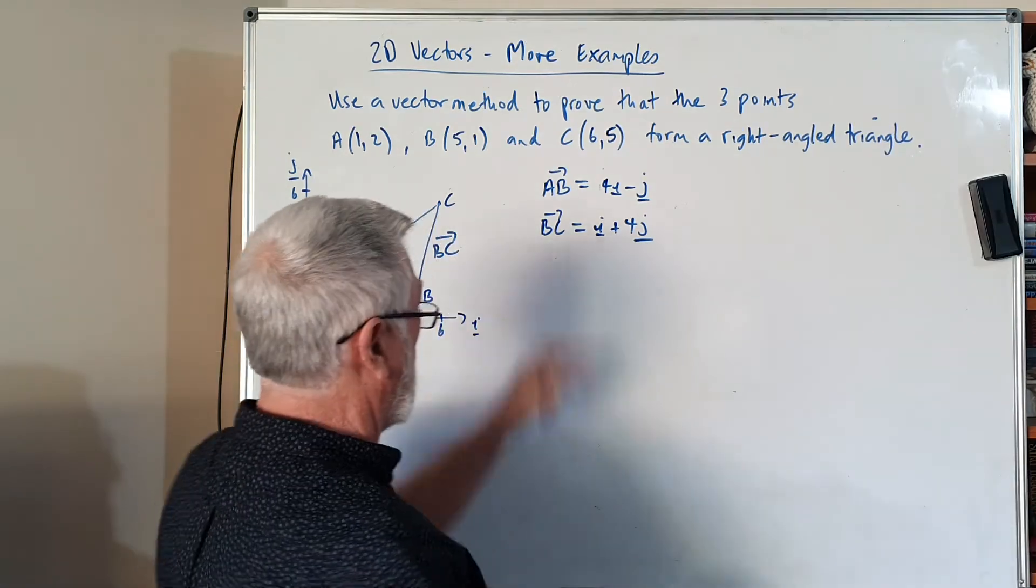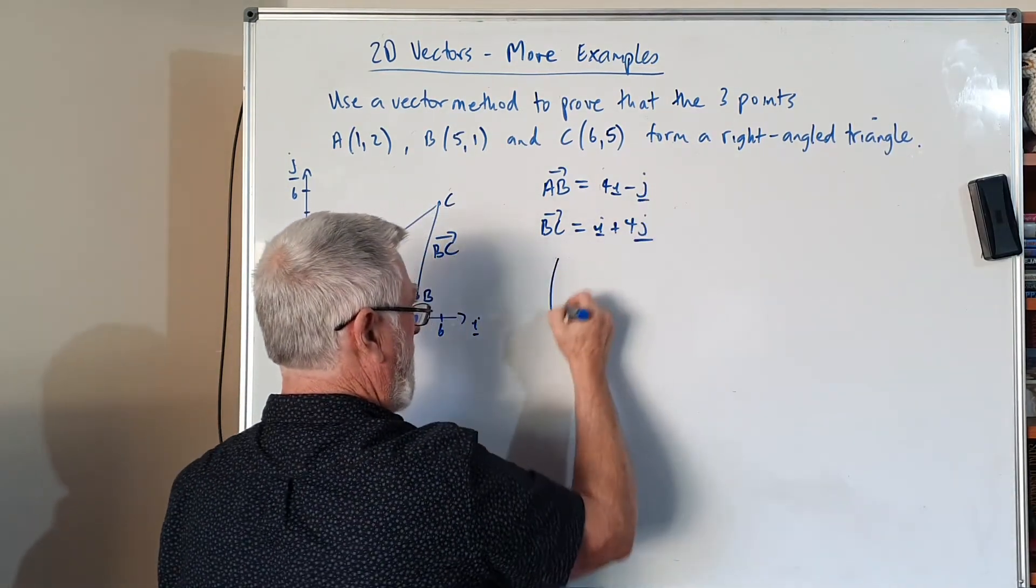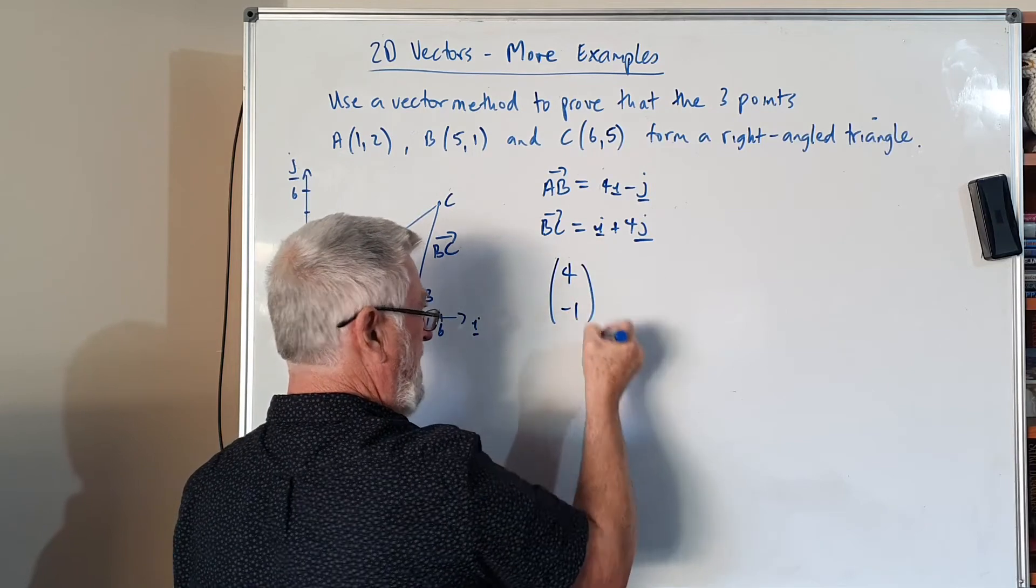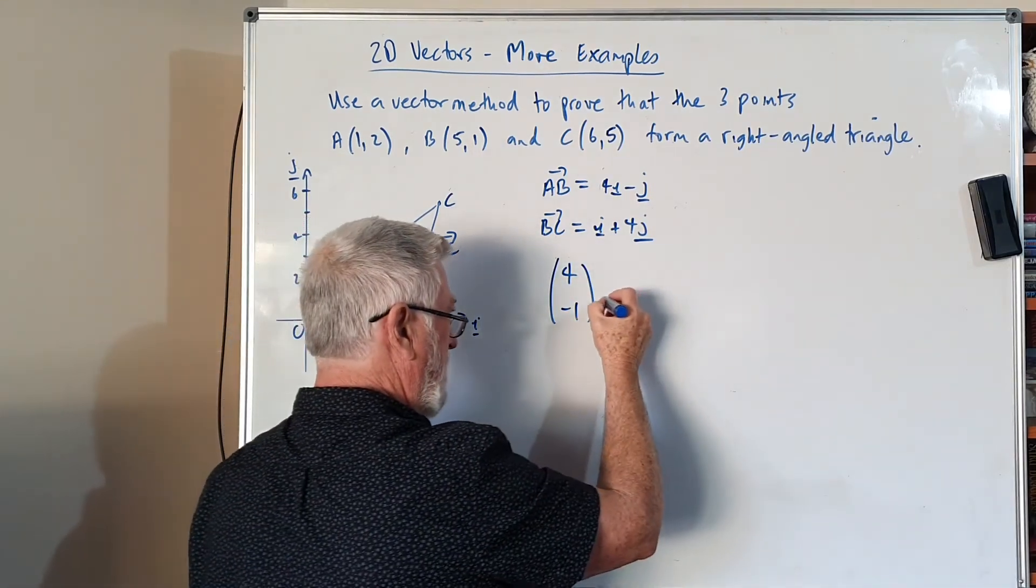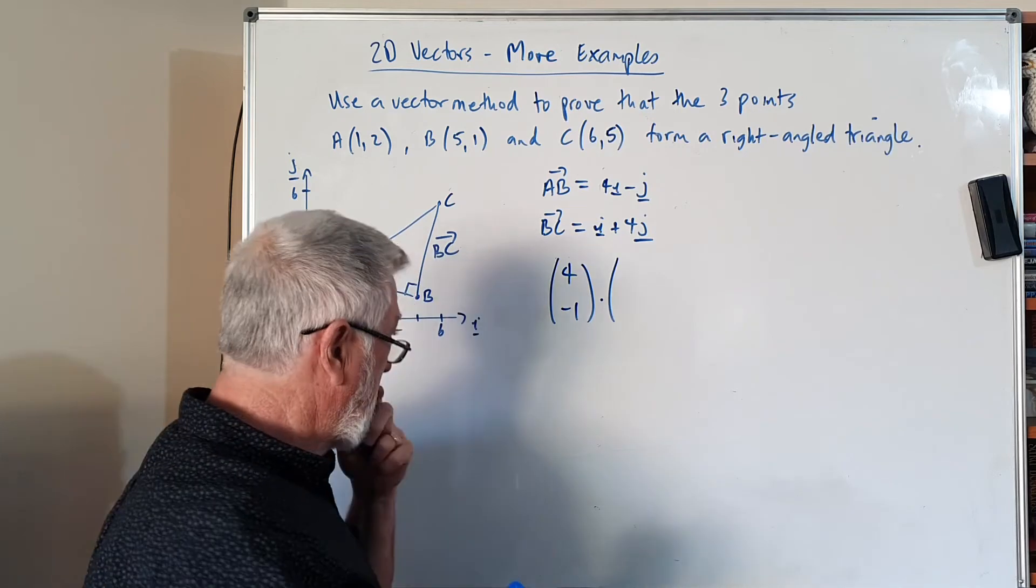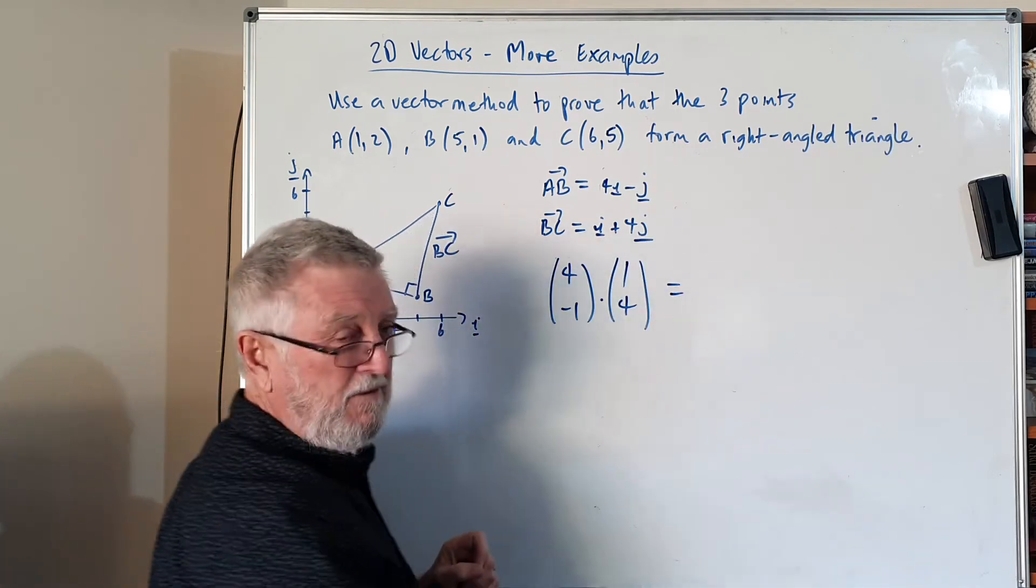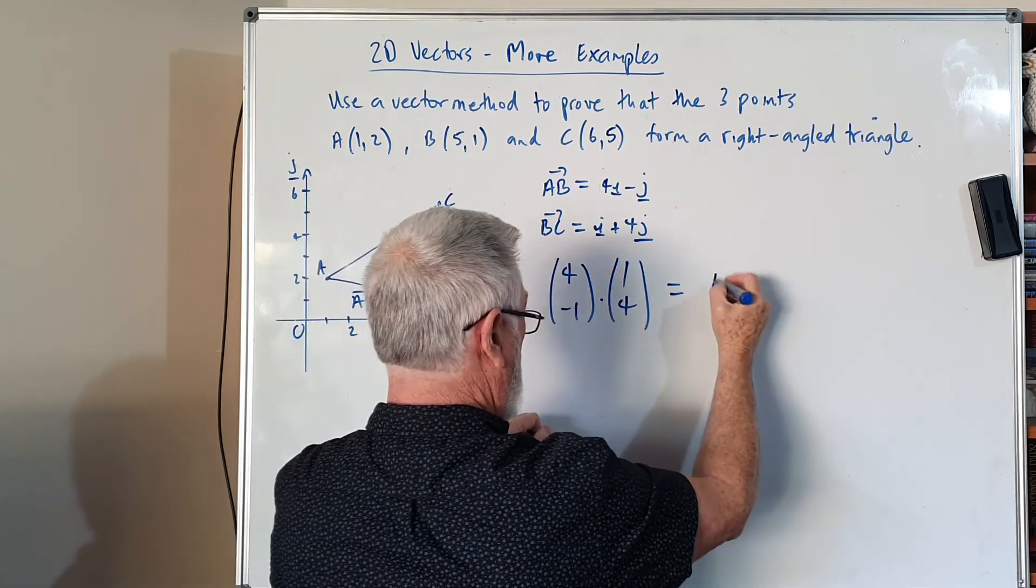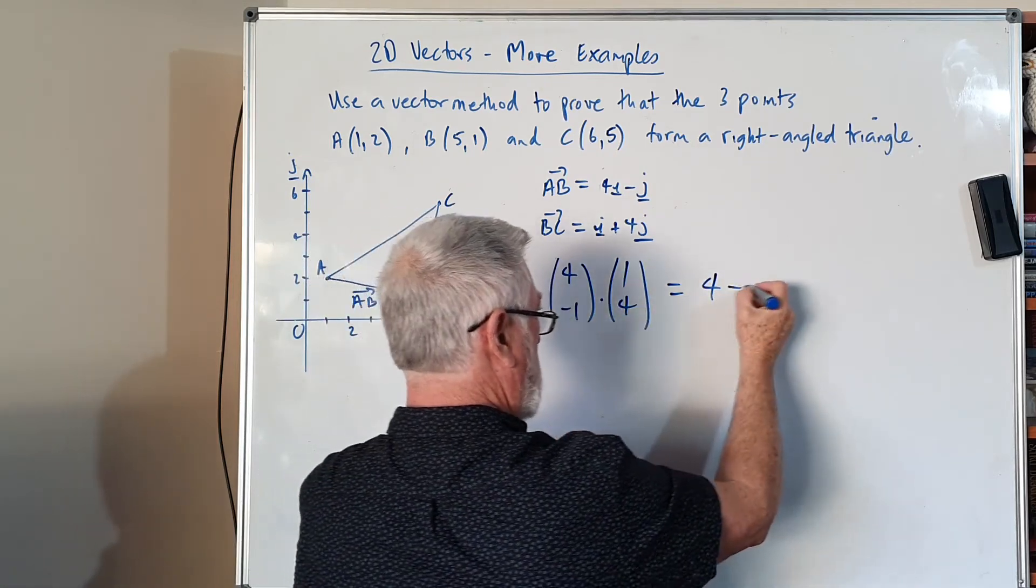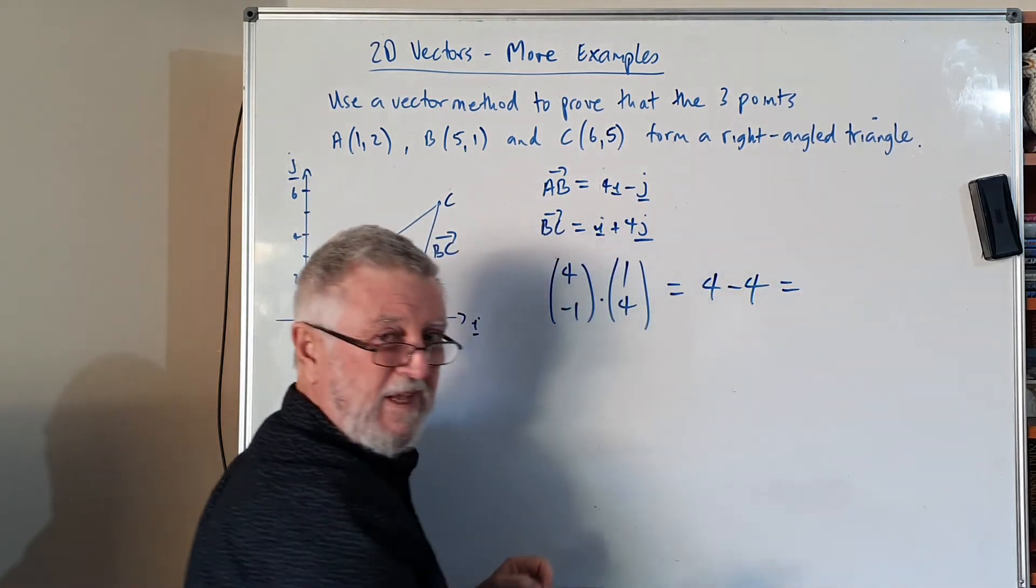So we want the dot product between these two. I prefer to write that as four minus one, and I don't have to write the i's and the j's. And I'm doing a dot product, not a cross product. And we've got one four. How do I multiply two vectors? Four times one is four, and minus one times four is minus four. And if you want to look at previous videos that explain a bit about that, when you get zero...